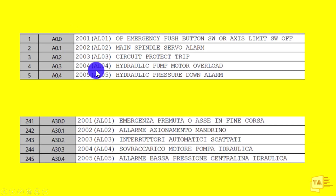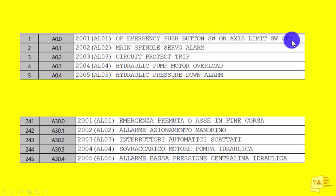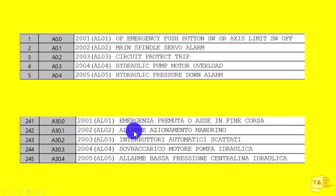For example, A0.0 — this is the same alarm. A0.0 is in the Italian language. The Italian language message is the same: main spindle is the same. So in the ladder diagram, A0.0 is the same.